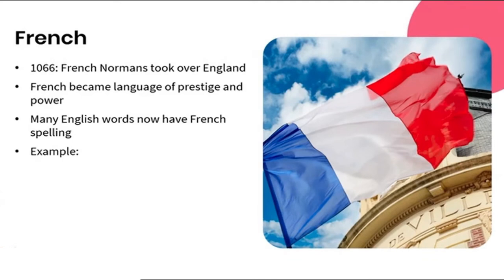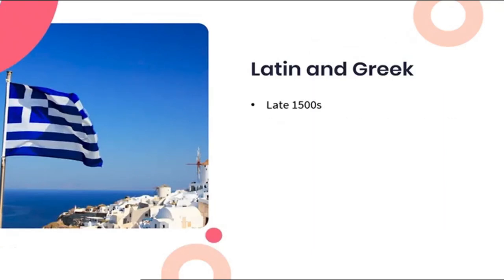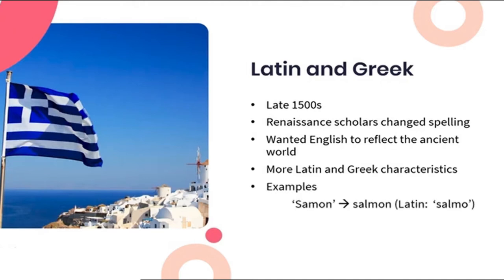For example, 'beauty' and 'quote.' Some words were even directly taken from French, for example 'cul-de-sac' and 'restaurant.' In the late 1500s, some Renaissance scholars changed the spelling of some English words to reflect the ancient world. So some English words were given more Latin and Greek characteristics. For example, the spelling of 'salmon' was changed to include a silent L to reflect the Latin word 'salmo.' 'Choir' was changed to reflect the spelling of the Greek word 'korodia.'